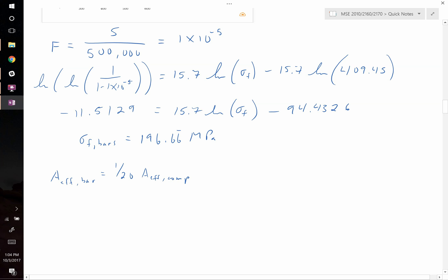Now we can go ahead and write out what the stress should be for the component to have the same failure rate. The stress for a component should be equal to the stress of the bar multiplied by the effective area of the bar divided by the effective area of the component, this all raised to the 1 over m.